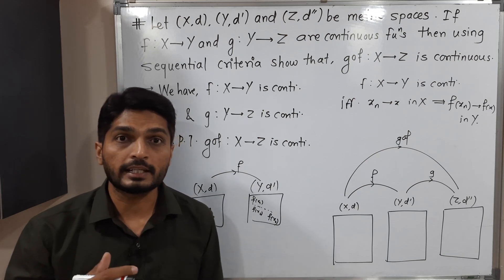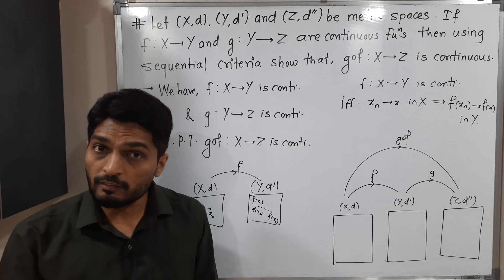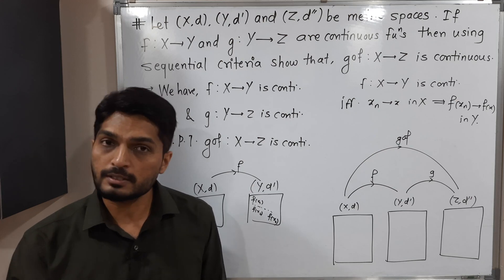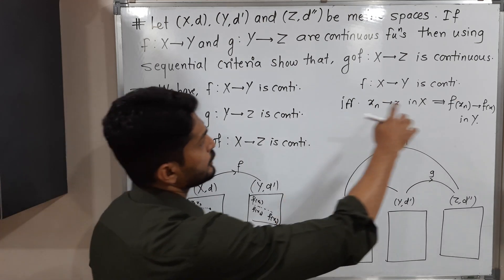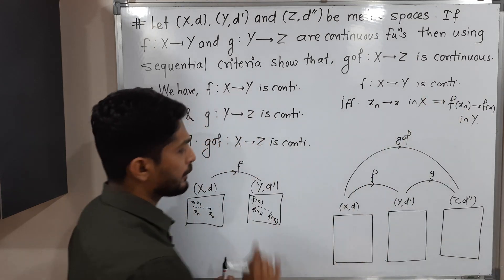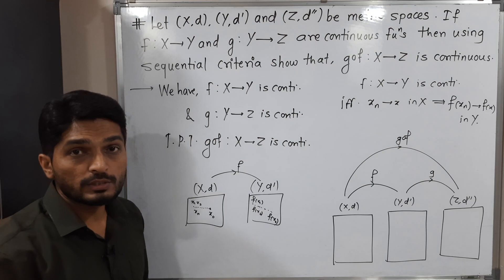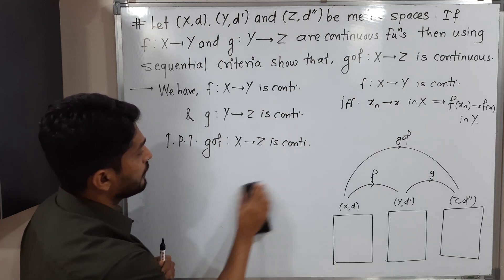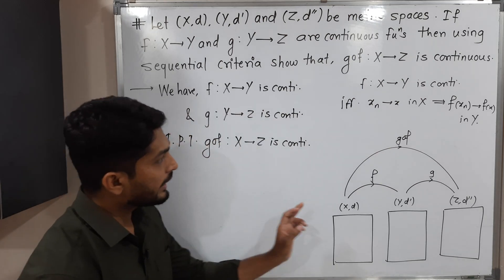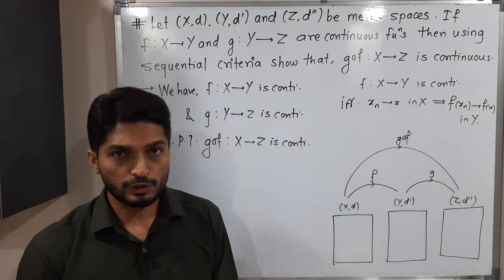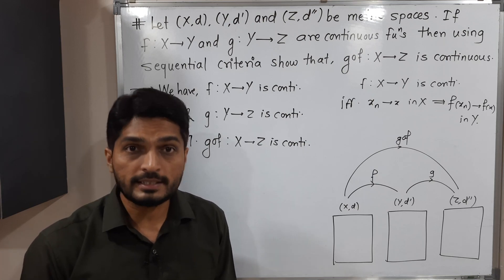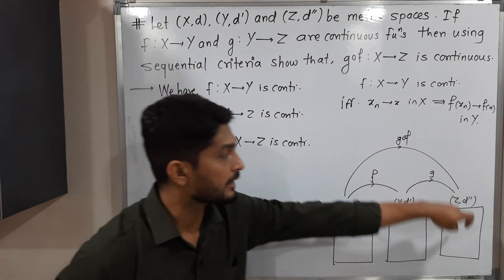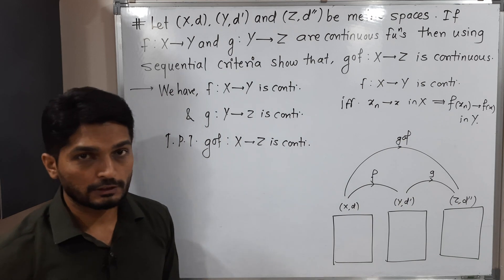Since it is an if-and-only-if statement, you can consider it as a definition and use it in other results as well. I'm going to consider this as the definition of a continuous function, and using it we are going to prove this result. Since they have mentioned using sequential criteria, we have to prove that G composite F is a continuous function. That means I will take one convergent sequence from the domain of G composite F and prove that its image sequence is also convergent.